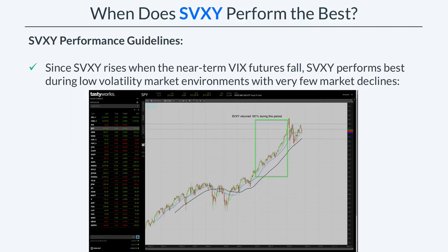When does SVXY perform the best, and when does it perform the worst? Since SVXY rises when the near-term VIX Futures fall, SVXY performs the best during low volatility market environments with very few market drawdowns. In this chart, I've highlighted 2017, in which the S&P 500 increased almost the entire time with very minor and infrequent market drawdowns. During that period, SVXY returned 181%, because it was a very low volatility environment with very few days in which the VIX Futures had increases.